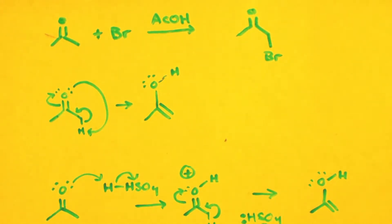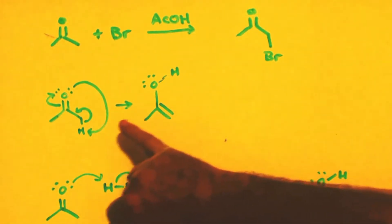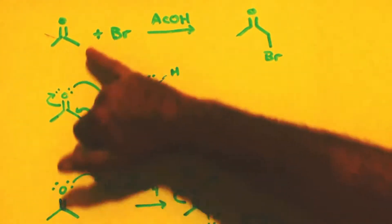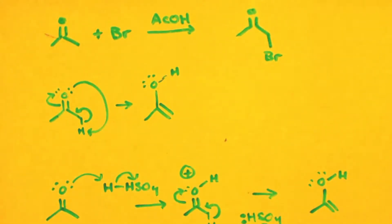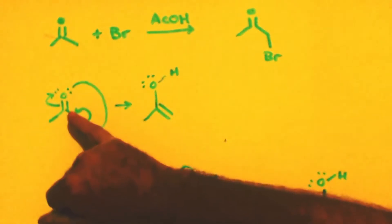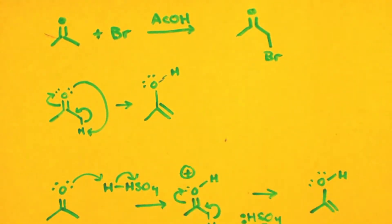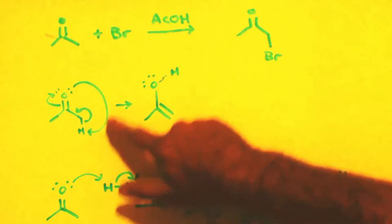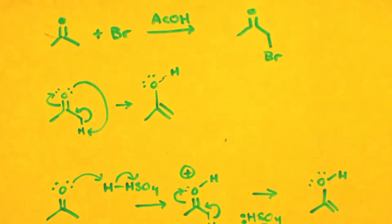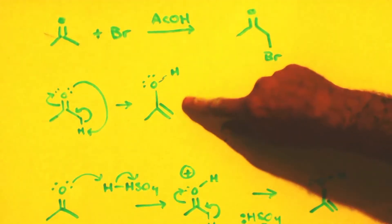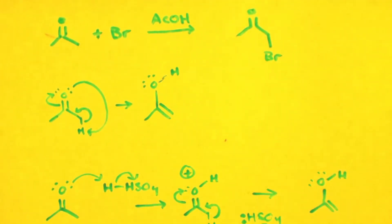Now how does this happen? All ketones tautomerize into enols. Here's an example of it. You can think of it as an internal thing where this hydrogen down here jumps up on the oxygen and makes an alcohol, and the double bond is split down here. Because it's an alkene and an alcohol, an enol.